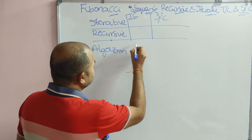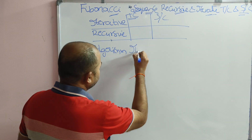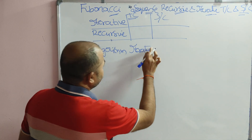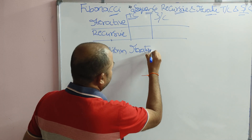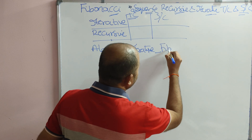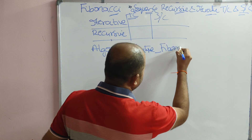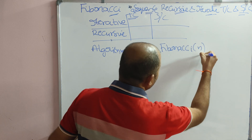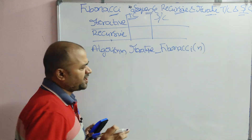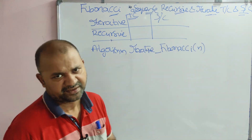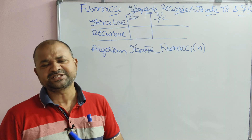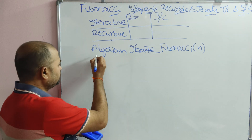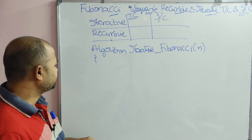This is the iterative approach. We are finding the Fibonacci sequence. Let us assume that this algorithm accepts a parameter called n. While writing the algorithm, there is no need to declare the variables.